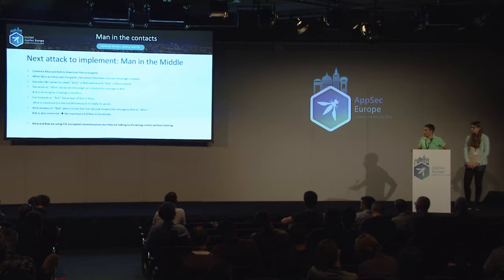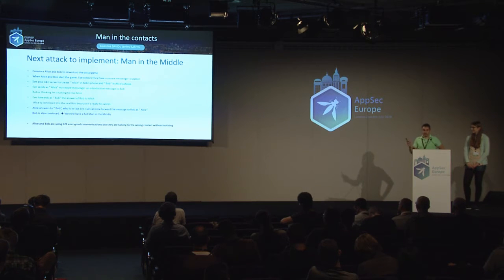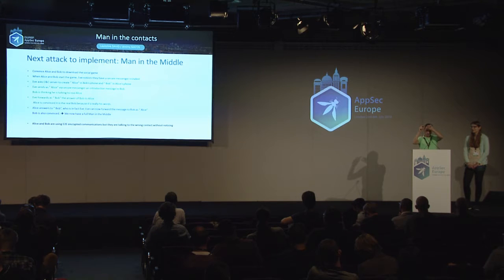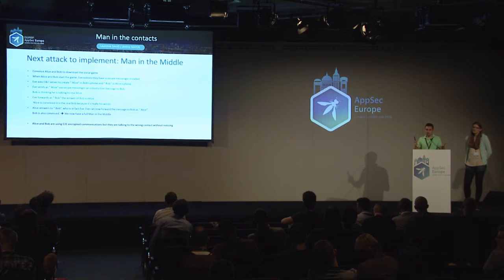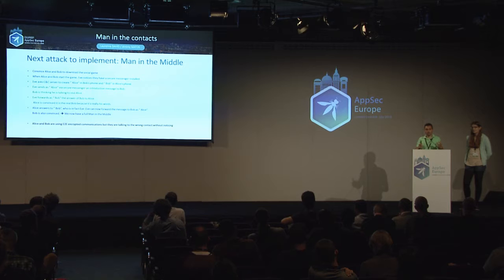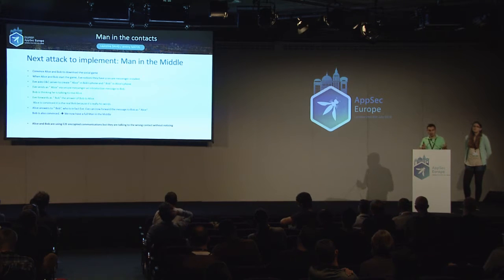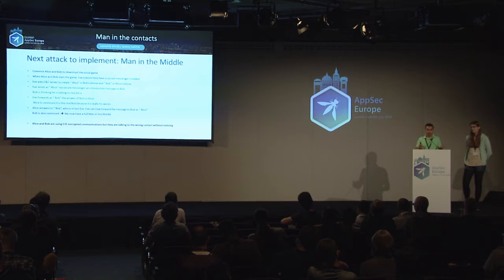In the end, Alice and Bob would see the yellow pop-up saying everything is end-to-end encrypted, so it's super secure. But they would be using end-to-end encrypted chats while talking to the wrong person. Privacy is zero, but they feel totally safe. This can be a real danger.